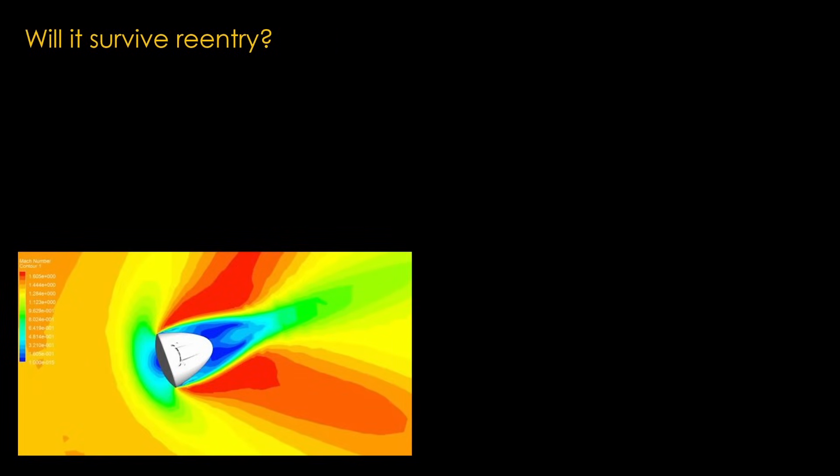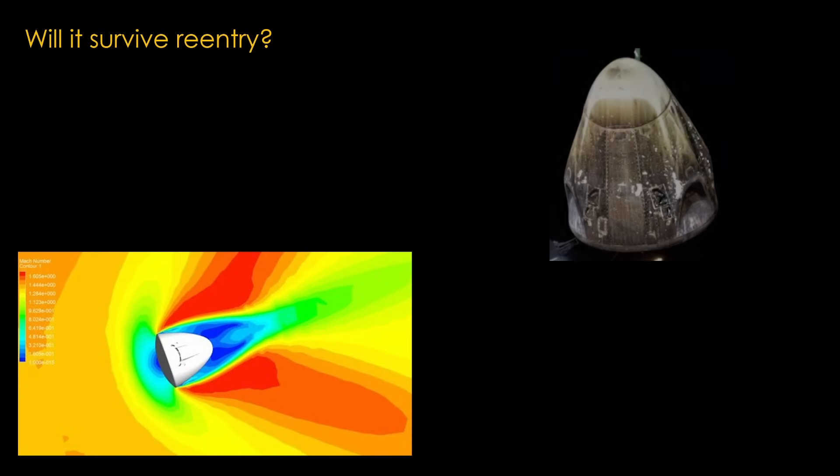Another question is whether the Jarvis design will survive reentry. Capsules tend to be widest at the base and short. They are built this way so that the high-temperature gas created in front of the heat shield doesn't damage the capsule higher up. Here's a simulation of SpaceX Dragon reentering, and it shows that the sides of the capsule stay in the cool gas. Even with that, Dragon does not reenter unscathed.